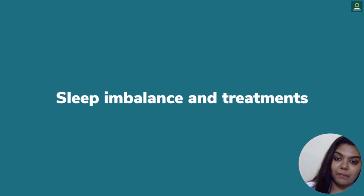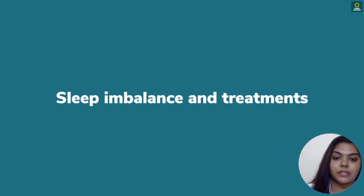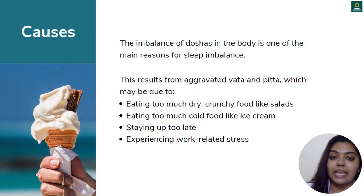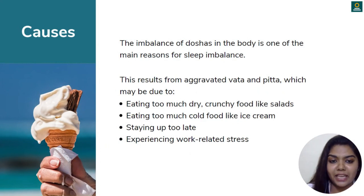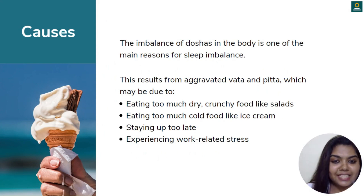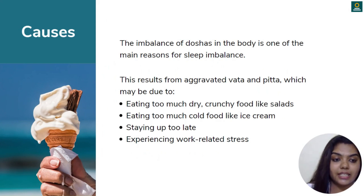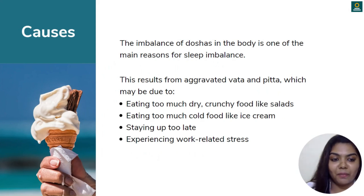Because of these bio-energy imbalances, certain sleep issues arise: interrupted sleep, oversleeping, or difficulty falling asleep. These dosha imbalances could be one of the reasons for your sleep issues. To avoid imbalancing these bio-energies, certain activities should be avoided — eating too much dry crunchy food like salads, eating too much cold food like ice cream, staying up too late, and experiencing work-related stress. There are many ways to combat work-related stress and maintain balance between your work life and stress levels.